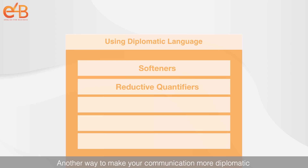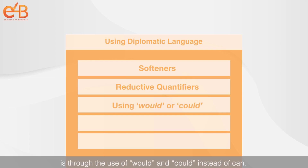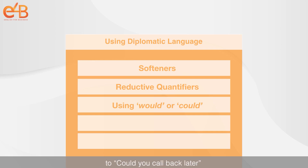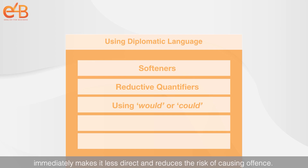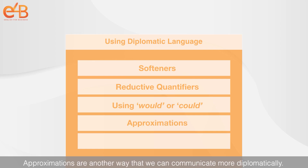Another way to make your communication more diplomatic is through the use of 'would' and 'could.' So changing a sentence like 'can you call back later' to 'could you call back later' immediately makes it less direct and reduces the risk of causing offense.